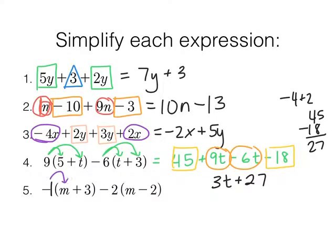Negative 1 times m. Negative 1 m. I don't need the 1. Negative 1 times 3, negative 3. Let's do this one. Negative 2 times m, negative 2m. Negative 2 times the negative 2 or negative 2 times minus 2, positive 4.